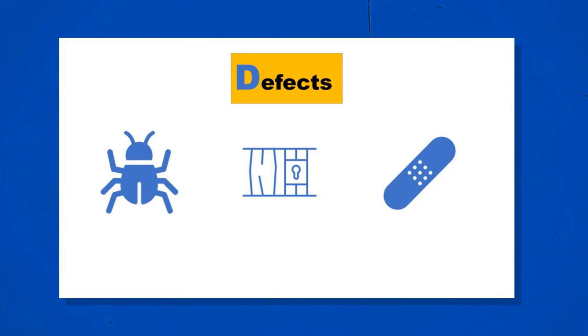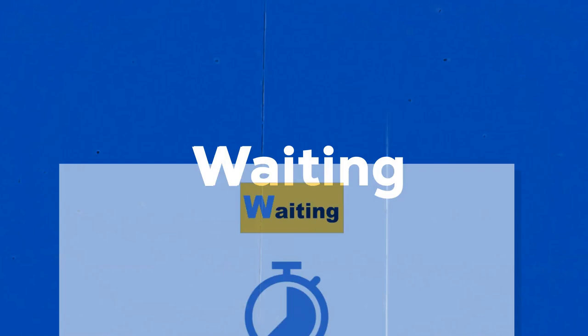D is for defects. We all know defects are time-consuming and none of us like them — we want to fix things right the first time. So defects are also one of the lean wastes. The last one — W is for waiting. Waiting for approvals, waiting for reviews — it wastes a lot of time. Waiting for onshore or offshore folks to come online — that's also lean waste.